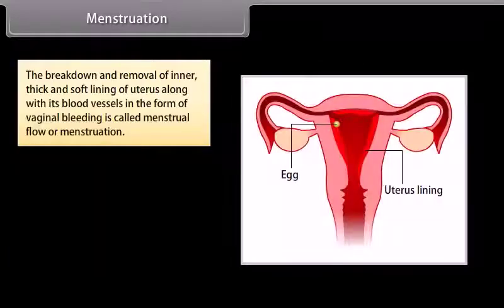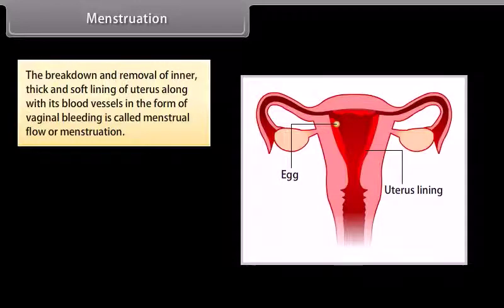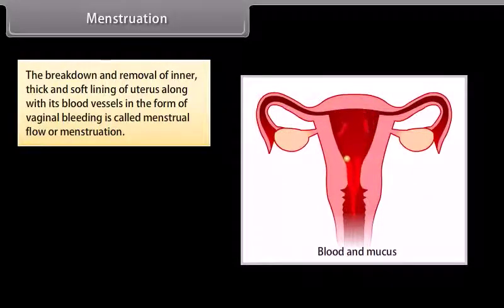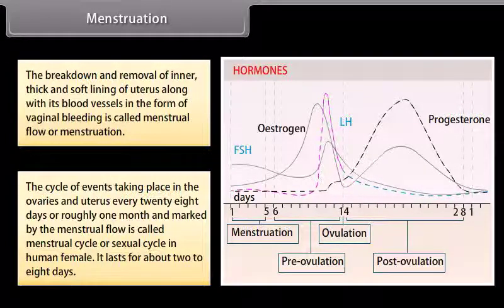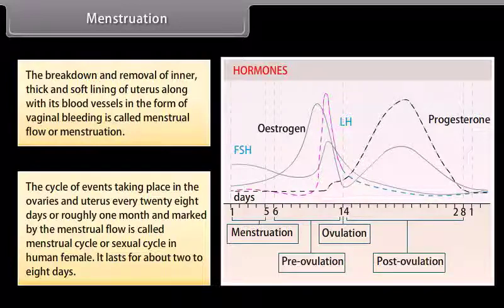The breakdown and removal of the inner thick soft lining of the uterus along with its blood vessels in the form of vaginal bleeding is called menstrual flow or menstruation. The cycle of events taking place in the ovaries and uterus every 28 days, marked by the menstrual flow, is called the menstrual cycle or sexual cycle. In human females it lasts for about two to eight days.